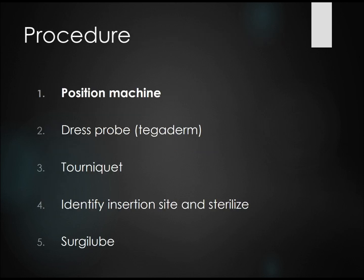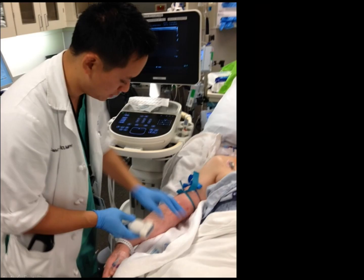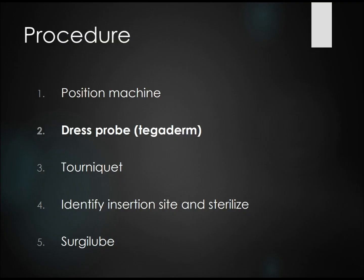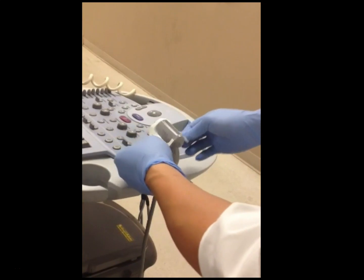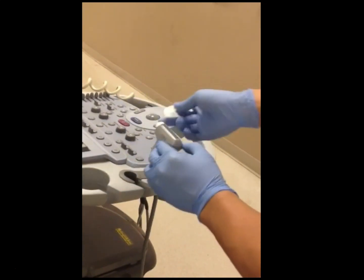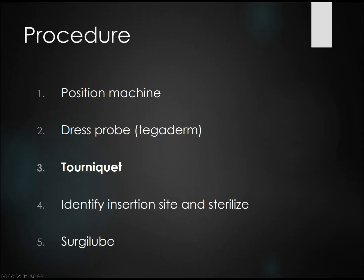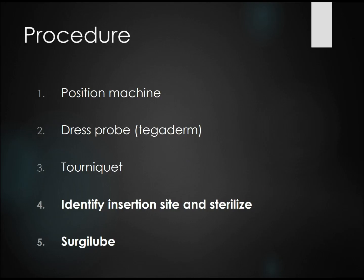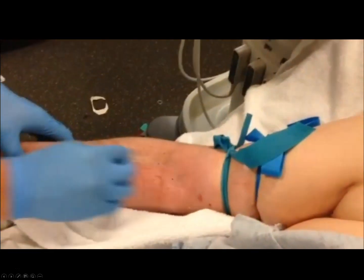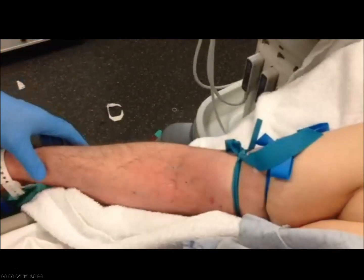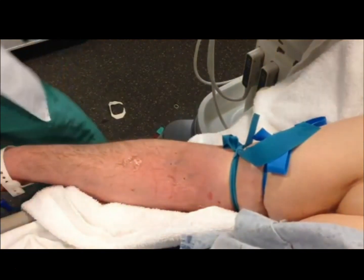Now let's talk about the procedure. The first step is to position the machine — ideally directly in your view, which may include placing it on the opposite side of the patient. Next, dress the probe by placing a Tegaderm directly on top without gel underneath, making sure there are no air bubbles. Then apply a tourniquet — sometimes two. Finally, identify your insertion site, sterilize it as you normally would, and apply Surgilube as your ultrasound gel. Here you can see the arm being cleansed and Surgilube being applied directly to the area.